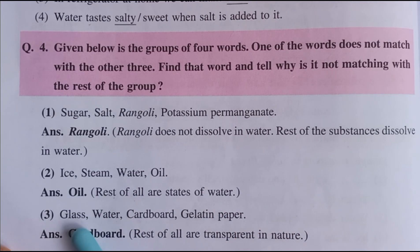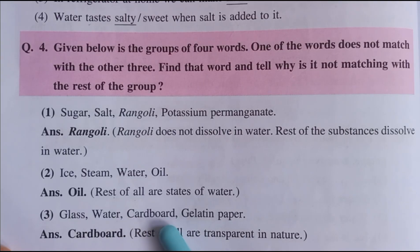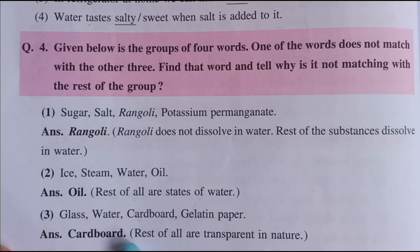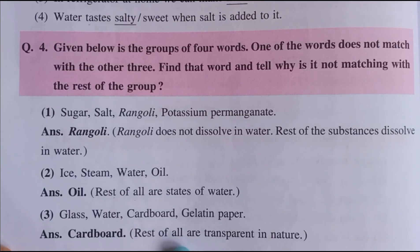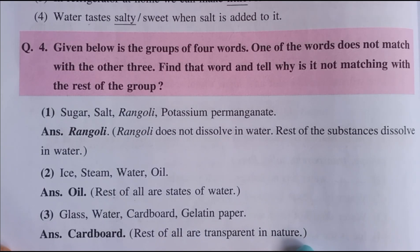Number 3: Glass, water, cardboard, gelatin, paper. Answer: cardboard. The rest of all — glass, water, gelatin, and paper — are transparent in nature. Cardboard is not transparent.